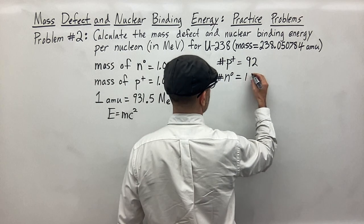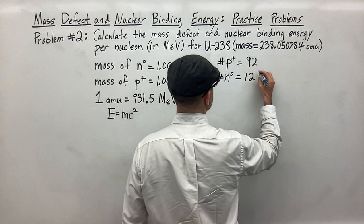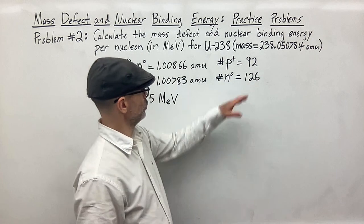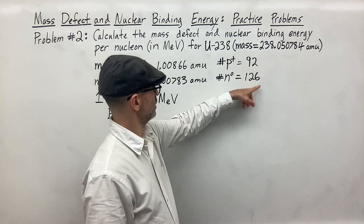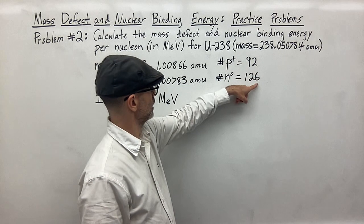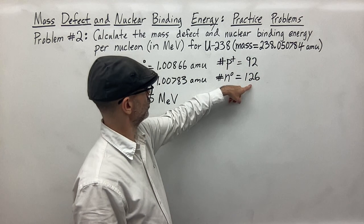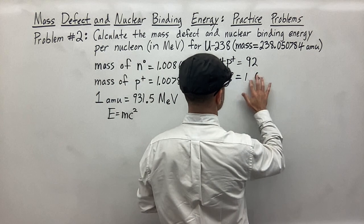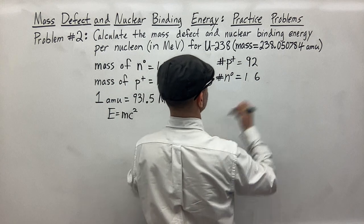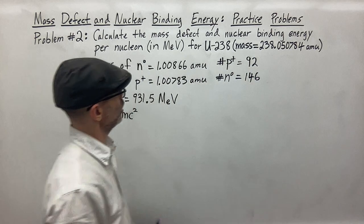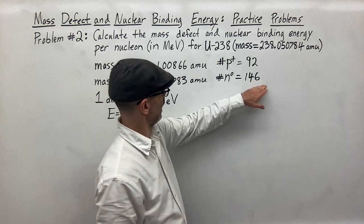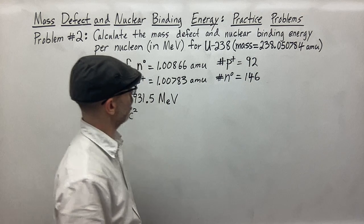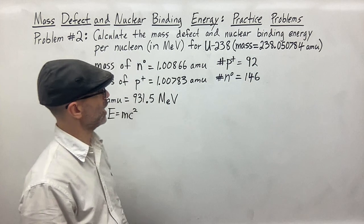So we get 146 neutrons. You can double check by adding 92 and 146 together — that gives you 238, which confirms the mass number. So we have 146 neutrons.